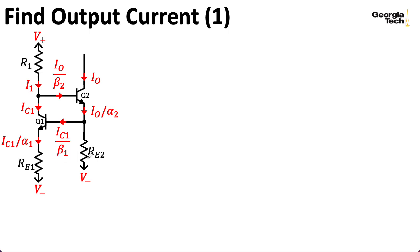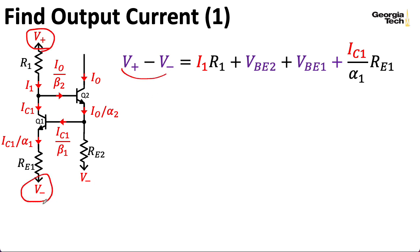So, we can now write a couple of Kirchhoff's voltage law equations. The first equation we'll write says that we're going from V plus to V minus. And then we can sneak a little sneaky path down through R1. So, the voltage drop there is going to be I1 times R1 by Ohm's law. And let's sneak around here through the base emitter junction of Q2. That's going to be a drop of VBE2. And then we'll sneak over here and go down the base emitter junction of Q1. So, that's a drop of VBE1. And then the final drop is across RE1, which is going to be RE1 times the current flowing through it according to Ohm's law.